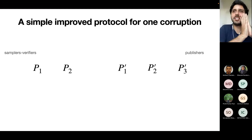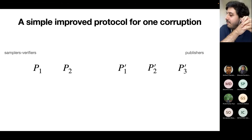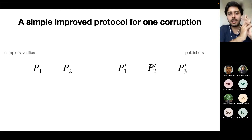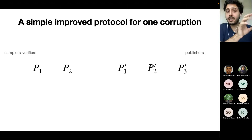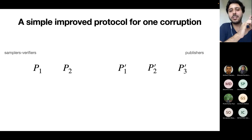This protocol gives 6T+2, which is an improvement over the naive compiler from round-based to YOZO. But it's natural to wonder if this is really the best we can do. Let me give an example showing we can actually do much better — for one corruption we can improve significantly with a very simple protocol.